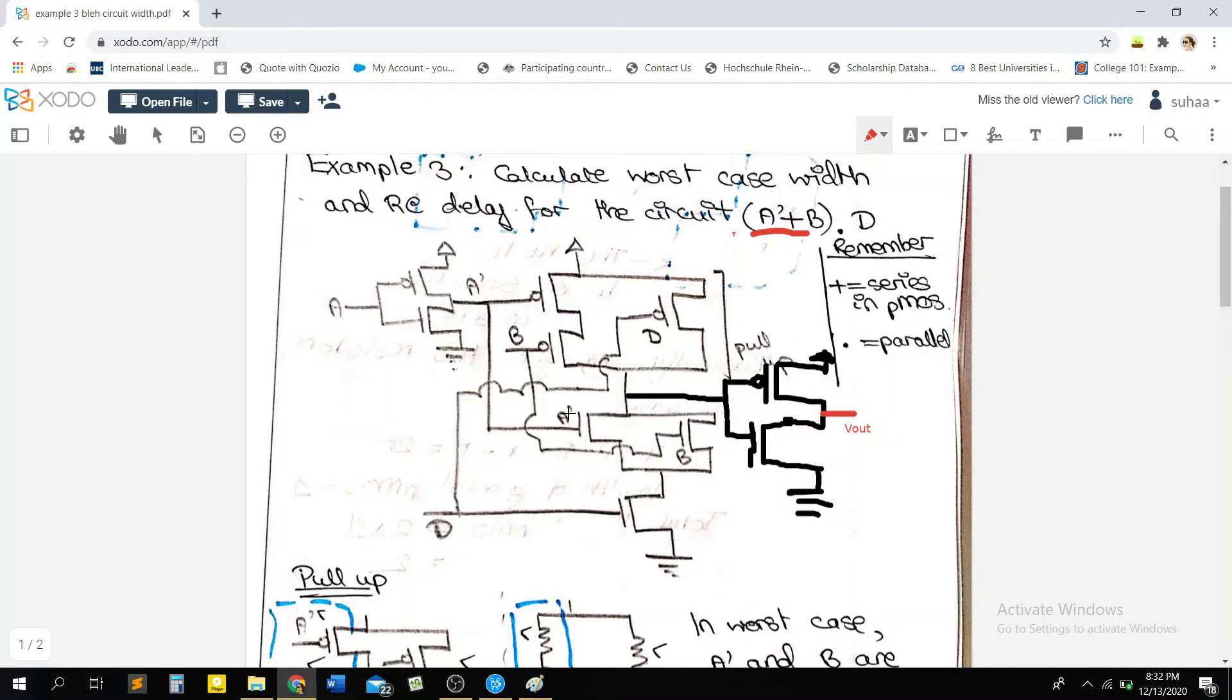Alright, so let's get started. The CMOS circuit is very simple. I've already explained this in the previous videos, won't go through it again. Remember that a dot in PMOS is parallel and plus is series. So that's why A' and B are in series and D is in parallel to them. And the inverse happened for the NMOS, the pull-down part.